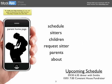The home page for the parent side of the app would have six different options: schedule, sitters, children, request sitter, parents, and about. At the bottom of the home page, however we arrange those icons — I showed you one where it was an actual telephone dial — we have to have these six different options on there.